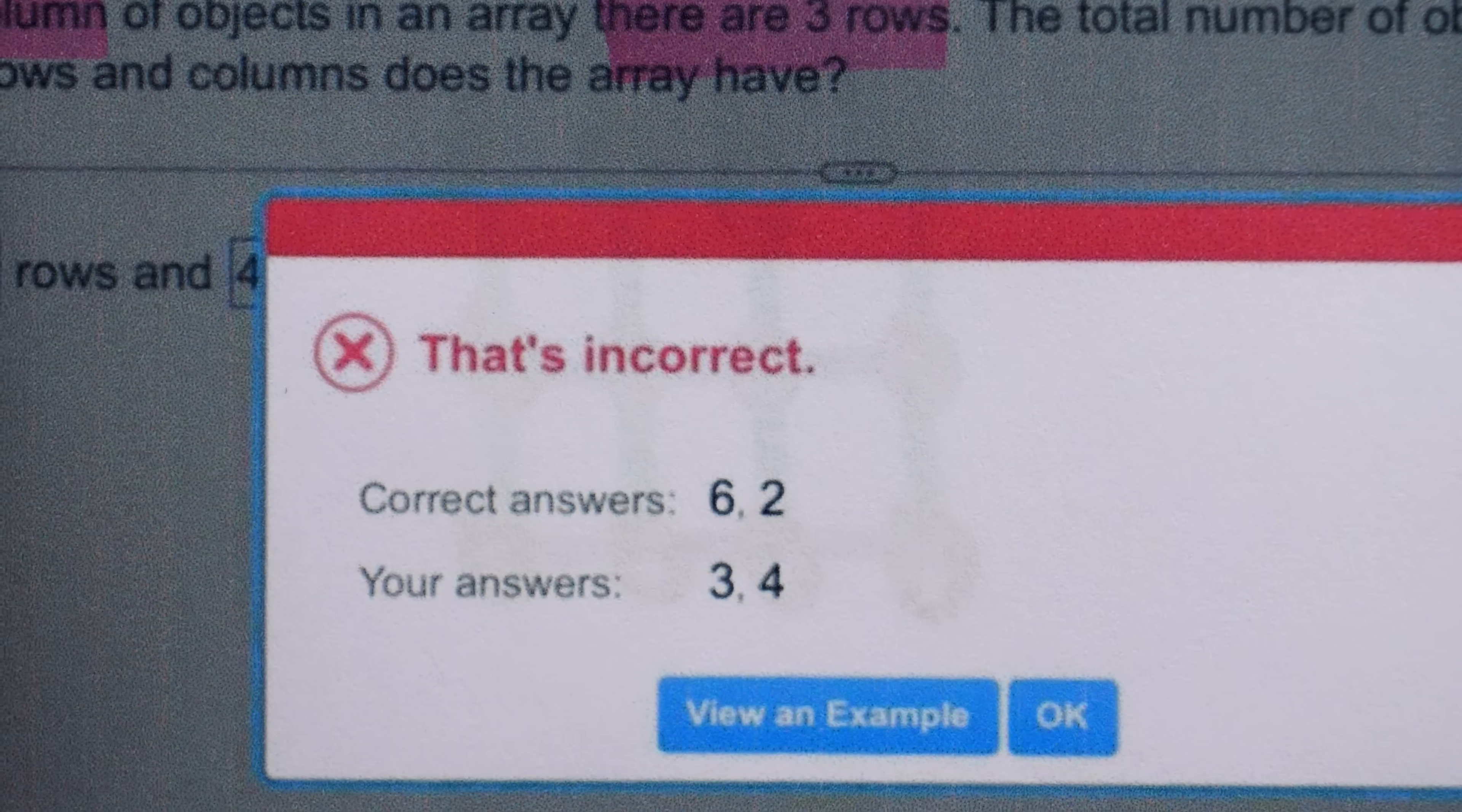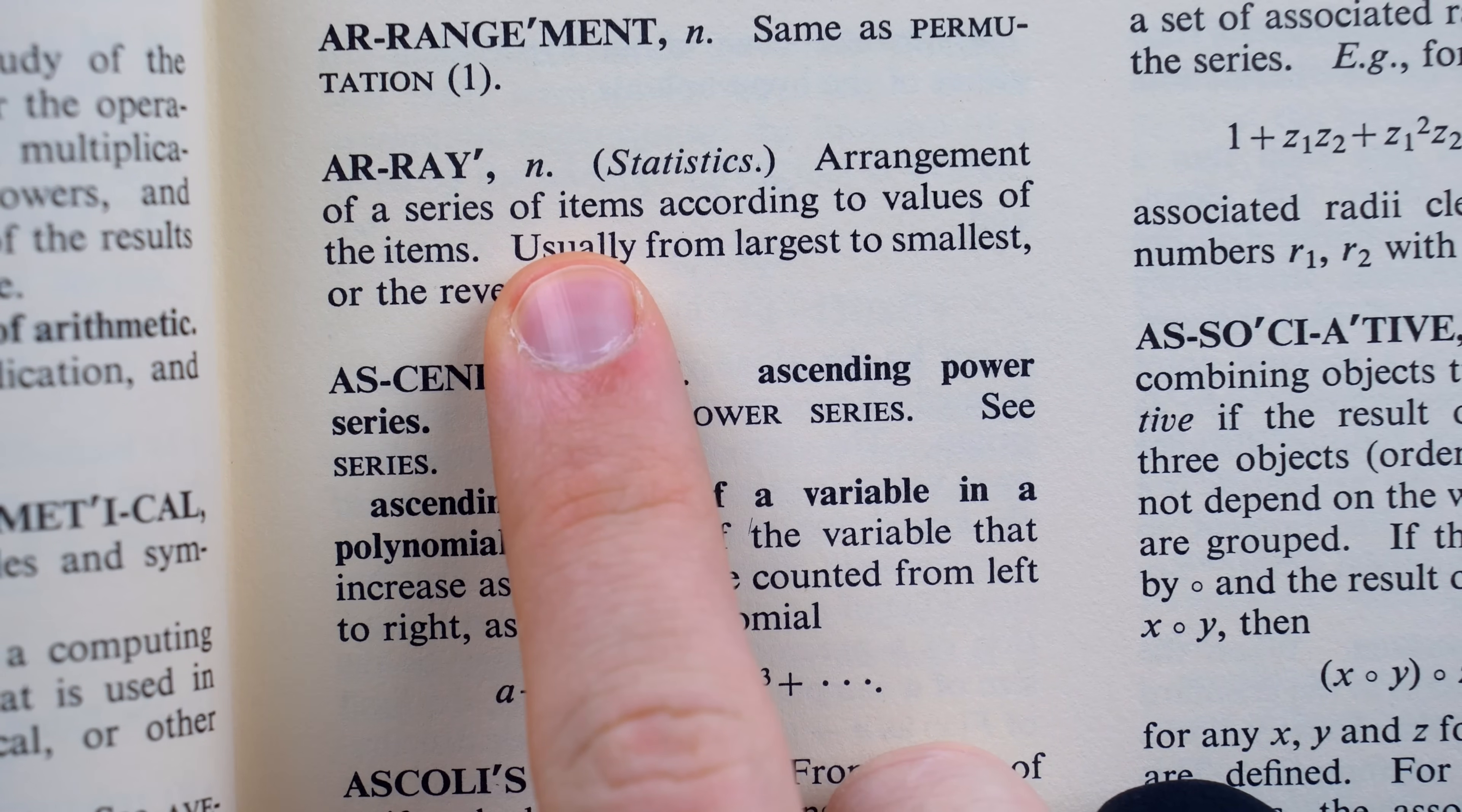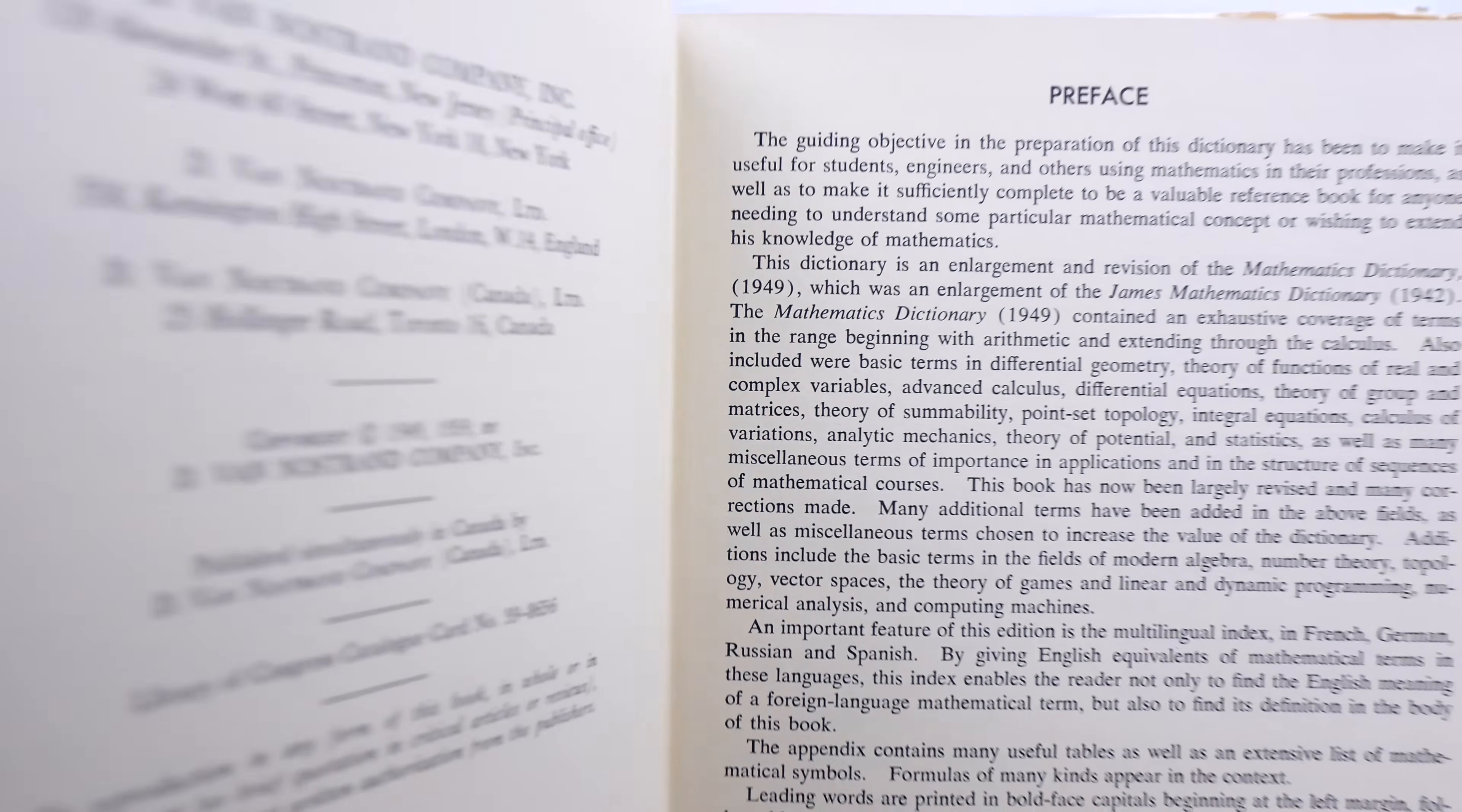But if that answer is wrong, let's just double check the definition of array to make sure we understand. Everybody, get out your mathematics dictionary, and let's see. Array from statistics: an arrangement of a series of items according to values of the items, usually from largest to smallest. I can tell just by the smell of this thing that the book has got to be from like 1966.